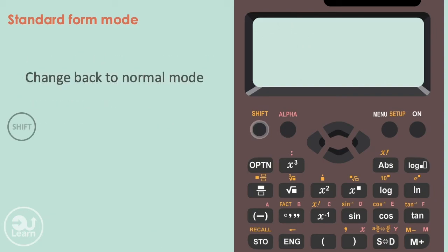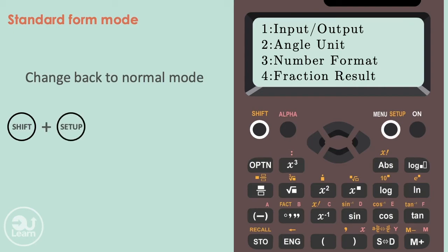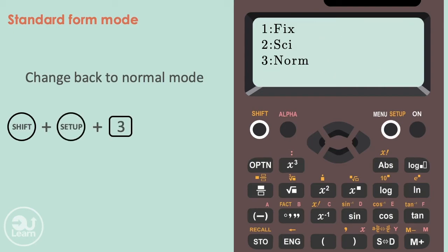To return your calculator to the normal setting, press shift, menu, then press the number for number format, press the number for norm, and finally, press 1. You'll be returned to the main screen, all cleared, and everything is back to normal.